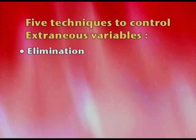To control the impact of extraneous variables, we have five techniques. The first technique is known as elimination. For instance, if I want to eliminate the impact of sound, I will develop a soundproof room so that I totally eliminate the impact of this extraneous variable of noise.